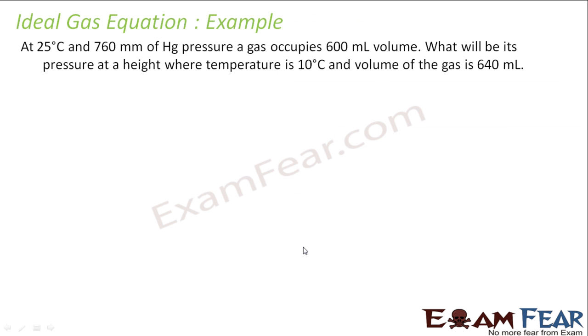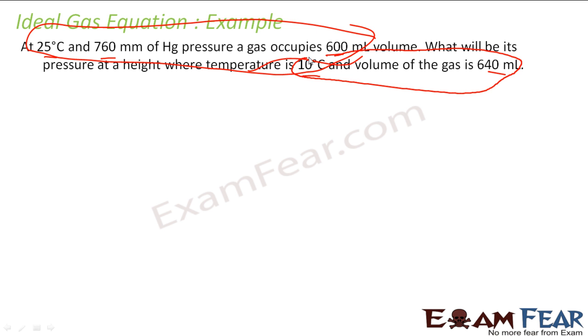Let us take one question on the ideal gas equation. The question says at 25 degree Celsius, 760 mm of Hg pressure, gas occupies 600 ml of volume. What will be the pressure at the height where the temperature is 10 degree Celsius and the volume is 640 ml? First thing to note, let us see if the units are same. Let us assume this condition is condition 1 and this condition is condition 2.